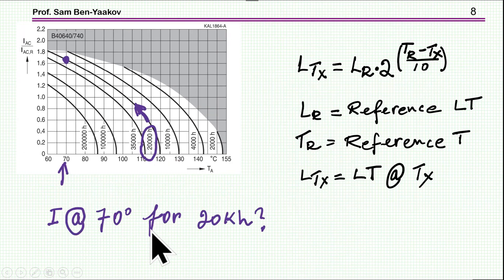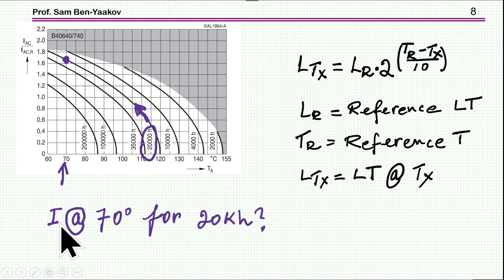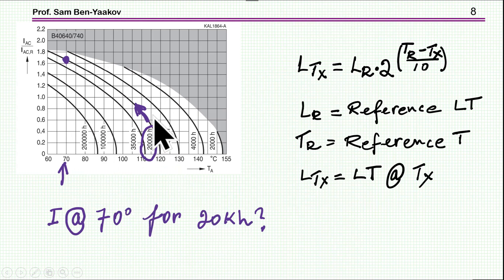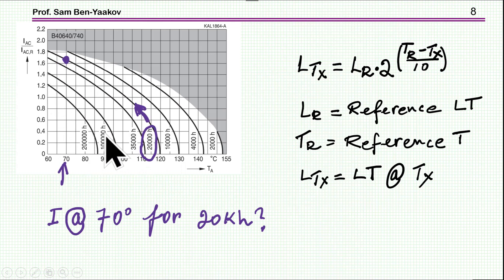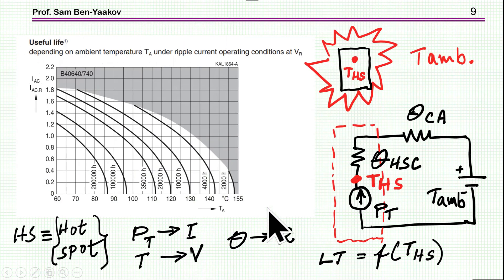Now I come to the second issue, which is a very practical question: if I want to work at a given temperature, say 70 degrees, how much current can I pass at 70 degrees and still get 20,000 hour lifetime? You can get this answer from the curve — look at 20,000 hours, go to 70 degrees, and read off the normalized current. But I want to develop the theory behind this relationship and understand what causes this curvature.